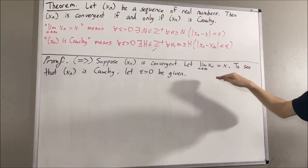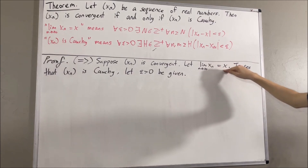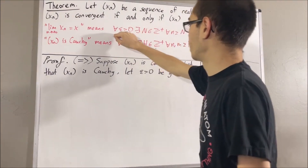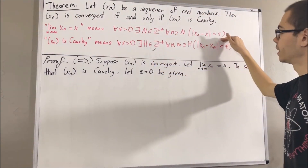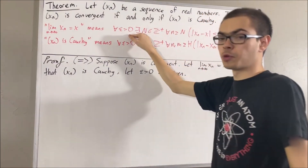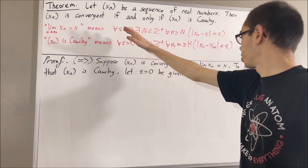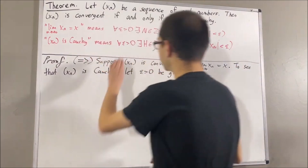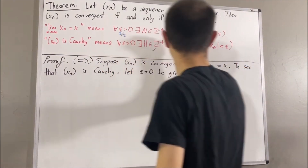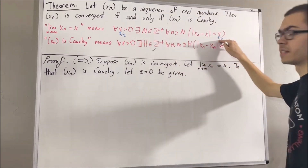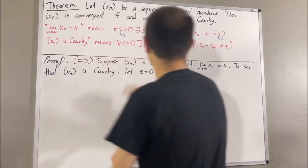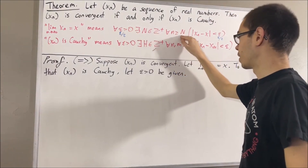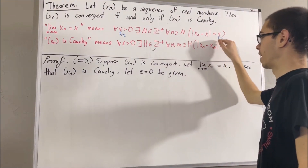Since we know that the limit of our sequence is equal to x, by what we have written up here, this means we know that this first statement is true. And this statement works for every positive real number, so in particular it must work for the positive real number epsilon over two. So taking epsilon to be epsilon over two, we have that this statement is true: there exists a positive integer capital N such that for all n greater than or equal to capital N, the absolute value of xn minus x is less than epsilon over two.